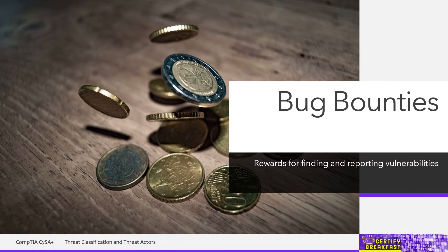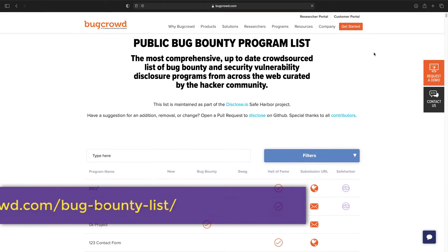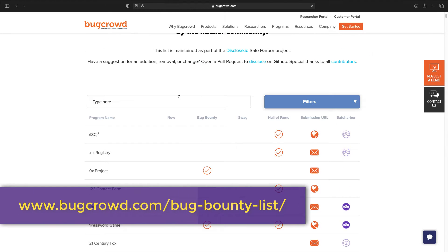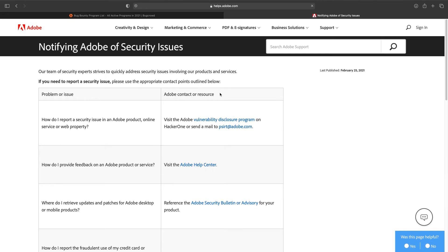One thing we can get from this story is the topic of bug bounties. These are programs that reward, with real money, those security researchers that manage to identify and submit vulnerabilities in the software products of a company. Basically, this is a method for companies to address that part of the Johari window where they try to get to know what they currently don't know — paying anyone who can find vulnerabilities so they can fix them, as long as the finder reports it back and doesn't try to exploit it or sell it on the dark web.